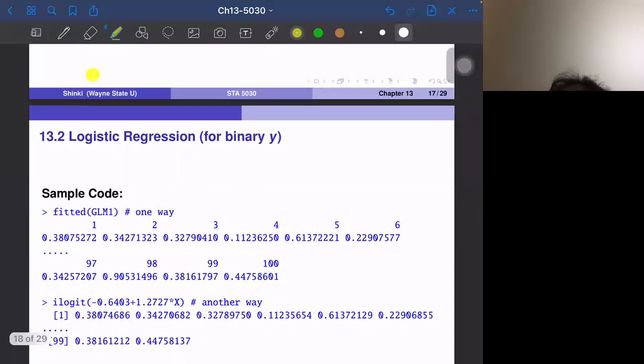In the previous example of 100 observations, the fitted values are here. Remember the first 50 observations have Y equals zero, and the last 50 observations have Y equals one. First 50 observations, probabilities are here, mostly less than 50%, sometimes more than 50%. Last 50 observations have some high and some low probabilities.